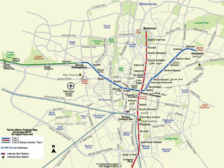Salutations my friends. This is a map of Tehran, Iran. Tehran is the capital of Iran and the largest city in Tehran province. With a population of around 9 million in the city and around 16 million in the larger metropolitan area of Greater Tehran, Tehran is the most populous city in Iran and Western Asia, and has the second largest metropolitan area in the Middle East, after Cairo. It is ranked 24th in the world by metropolitan area population.